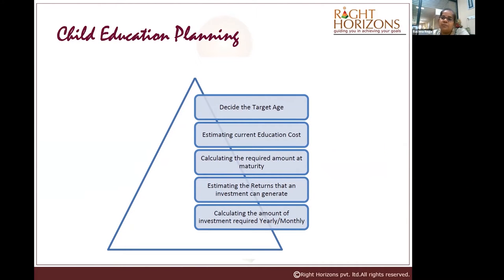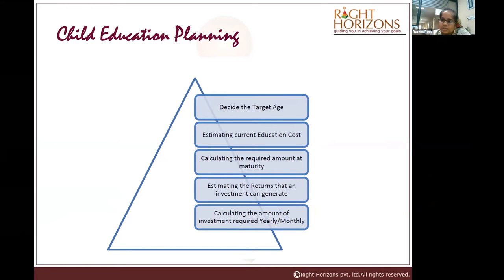If your kid takes a BBA or similar degree like BCom, it's not much of an issue because nowadays school and college fees are similar and don't pinch much. But if they go abroad for higher education like an MBA or any other master's degree, then the calculation and estimation of what investment is needed becomes critical.